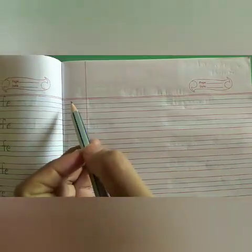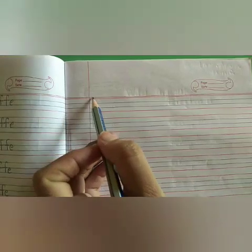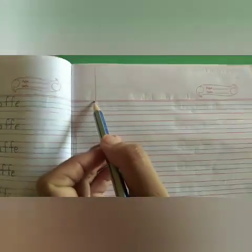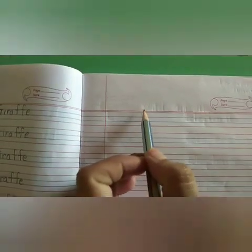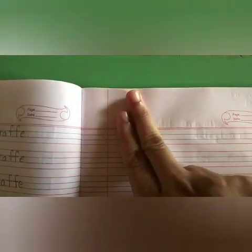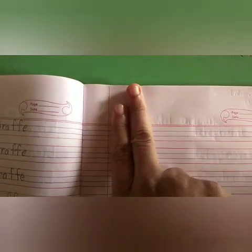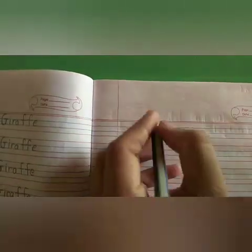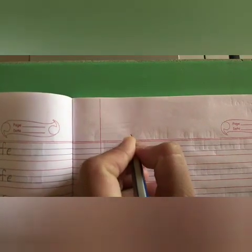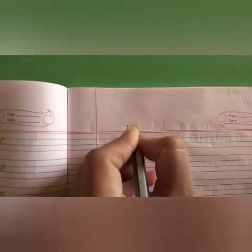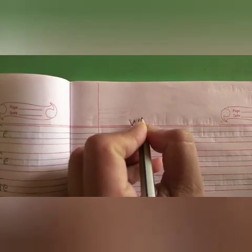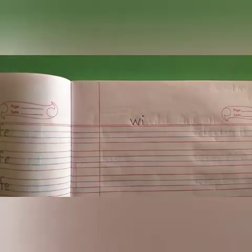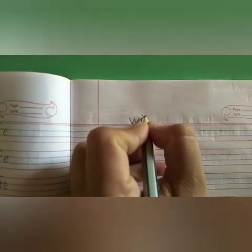Students, whenever you write this work you have to write the date. Now we will be writing the title. We will keep two finger spaces from the margin line and then we will write capital W, then small i, small l.